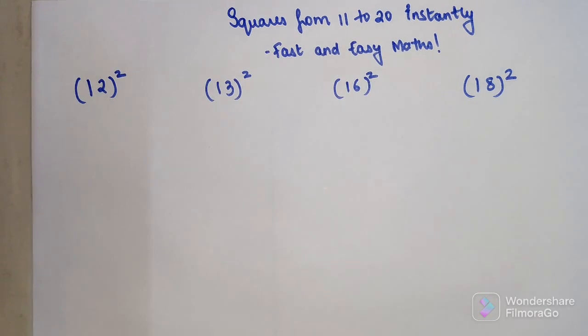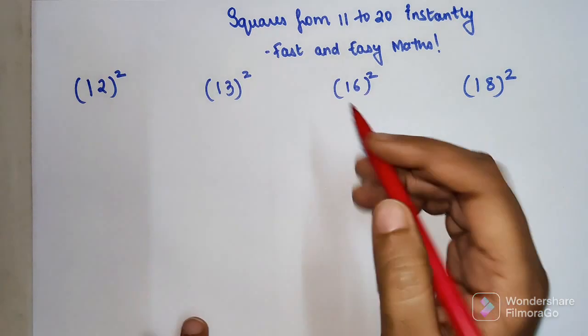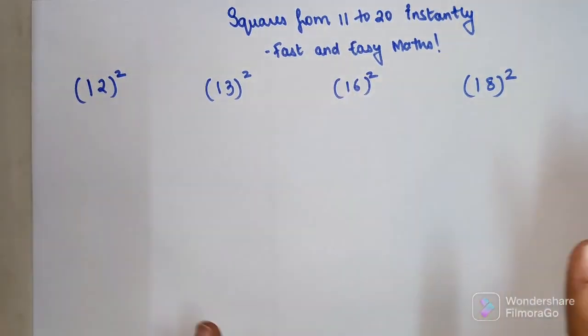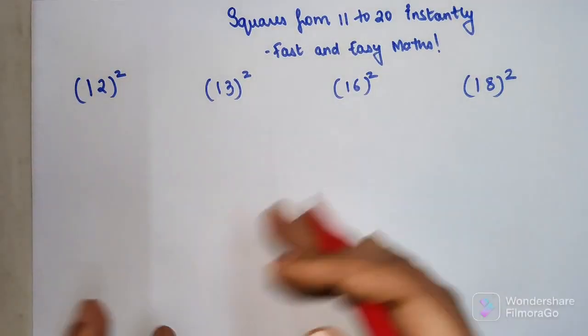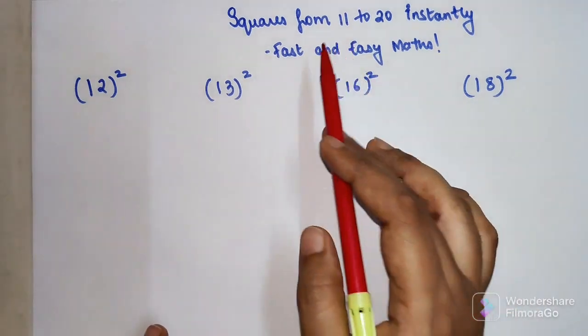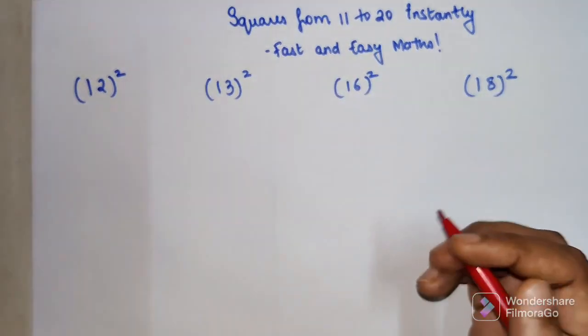Students, normally when you prepare for these entrances it's very important for you to remember squares up to 25. But I'm going to show you a trick where if you don't remember the squares from 11 to 20, you'll still be able to do it instantly.